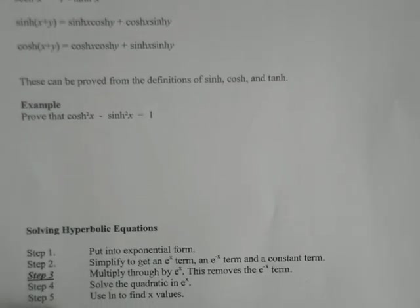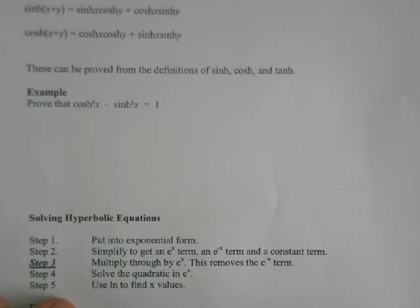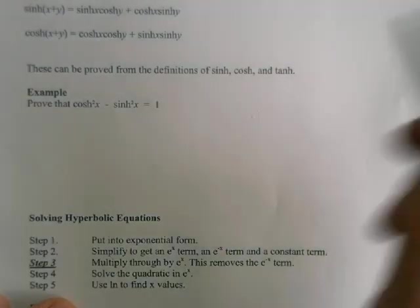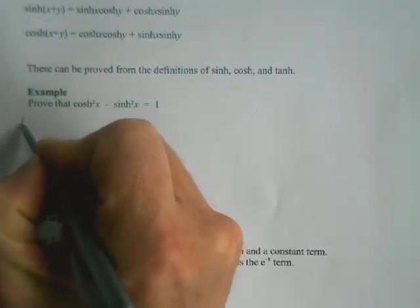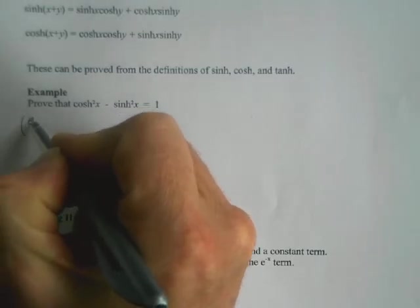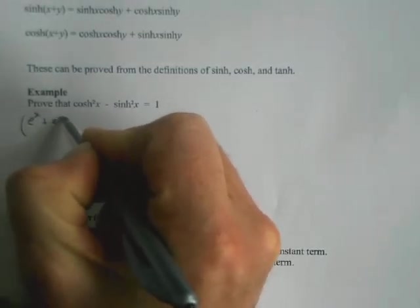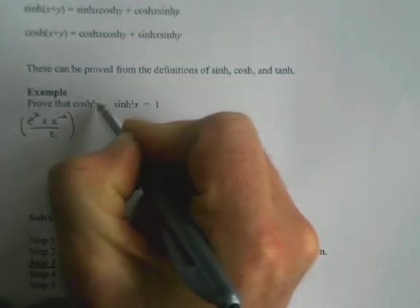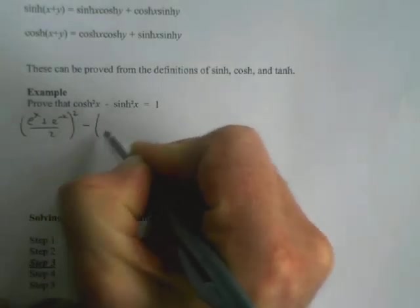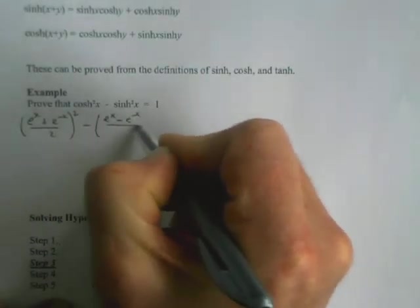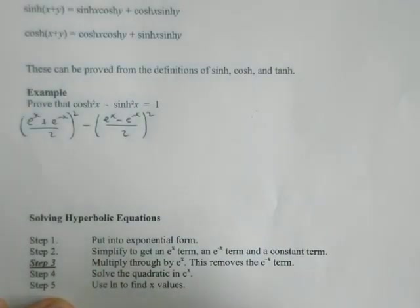So you can see how it's done. The simple idea is just to put them back into their exponential definitions. So cosh x is (e^x + e^(-x))/2 squared, minus sinh x is (e^x - e^(-x))/2 squared. We want to show that equals 1.